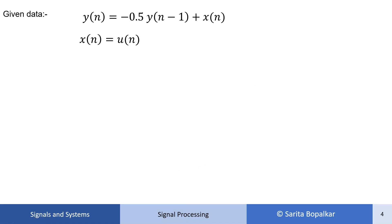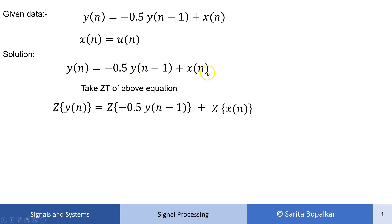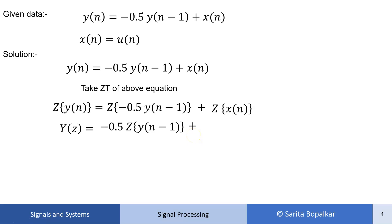Let's solve. Our difference equation is given with input u(n). Applying Z-transform to both sides: the Z-transform of y(n) is Y(z), and we take -0.5 outside for the Z-transform of y(n-1), then add the Z-transform of x(n), which is X(z).